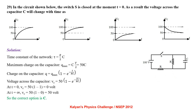In the circuit shown, switch SC is closed at T = 0. Time constant τ = (R/2)C. Maximum charge Q_max = C × V/2 = 50C. Charge Q = Q_max(1 − e^(−t/RC)). Voltage across capacitor Vc = 50(1 − e^(−2t/RC)). At T = 0, Vc = 0V; at T = ∞, Vc = 50V. So the correct option is C.